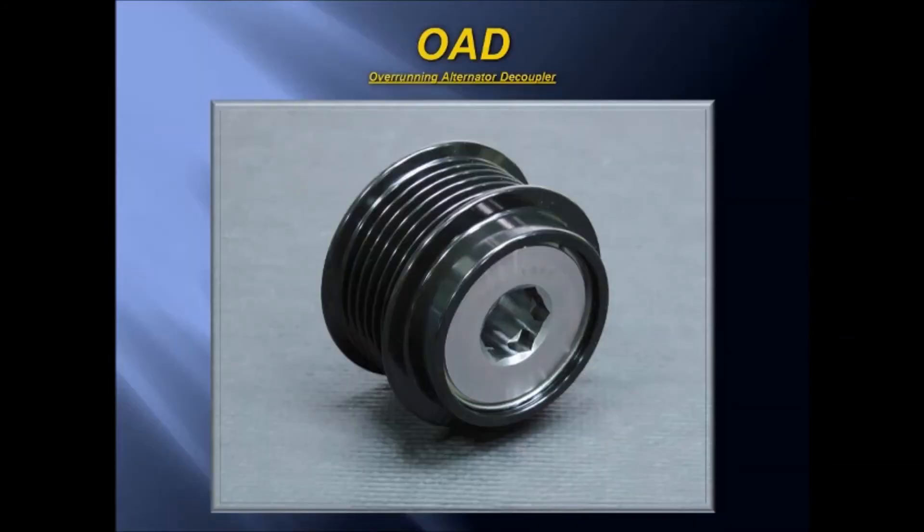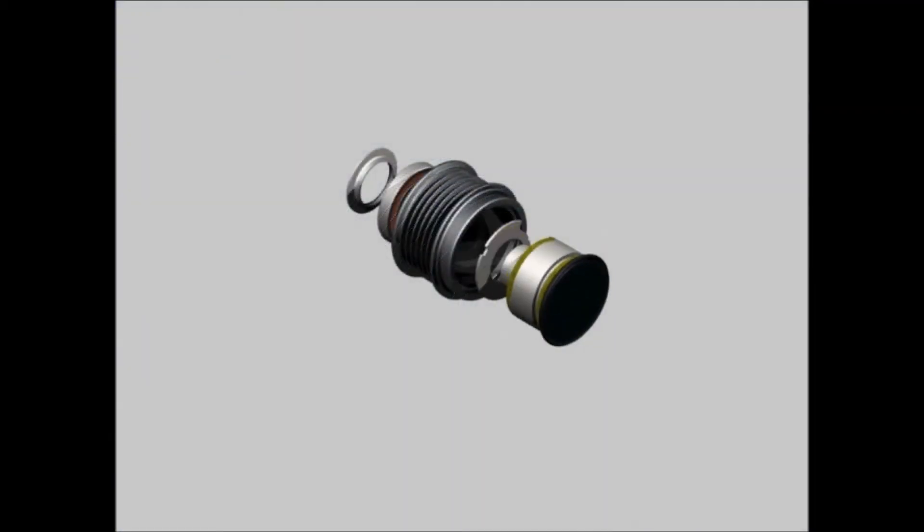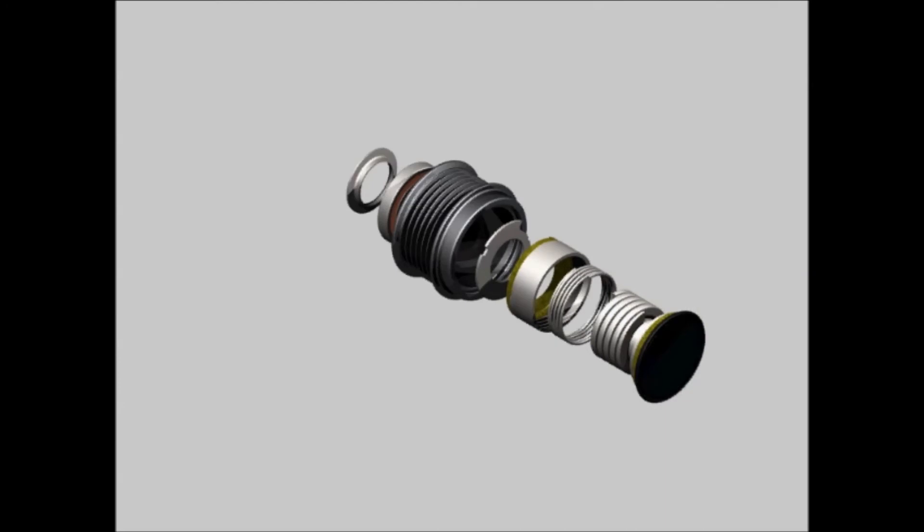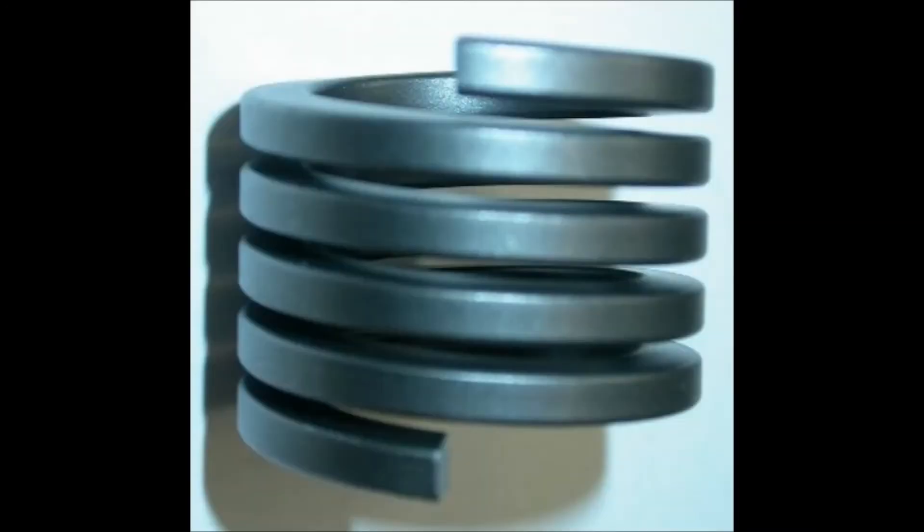And now the OAD. This stands for Overrunning Alternator Decoupler. The OAD not only has the one-way clutch inside the pulley to address the belt chirp noises, just like the OAP, but it also incorporates a special steel torsion spring that absorbs engine vibrations that are caused by the firing of each cylinder and the lower idle speeds of newer engines.